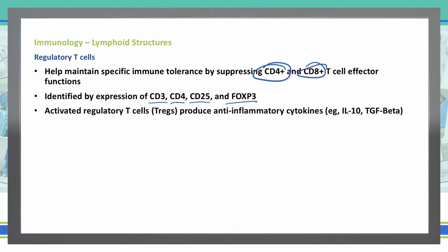Activated regulatory T cells, also known as Tregs, will produce anti-inflammatory cytokines. Some examples of those anti-inflammatory cytokines are going to be IL-10 and TGF-beta.